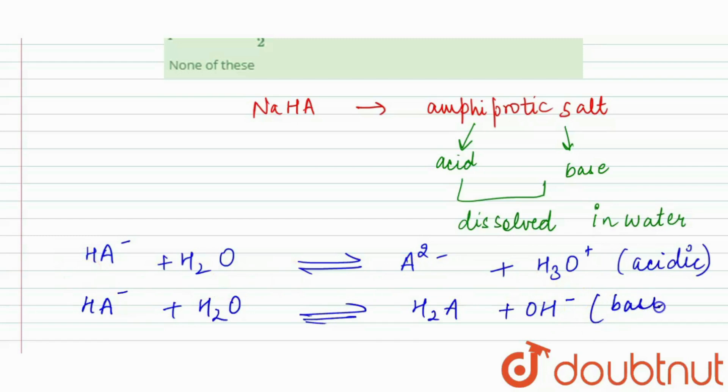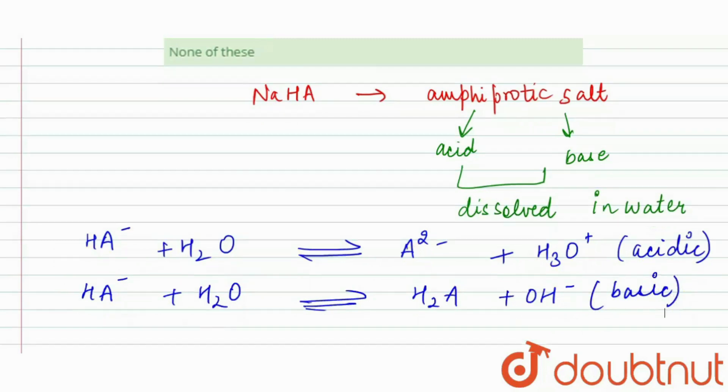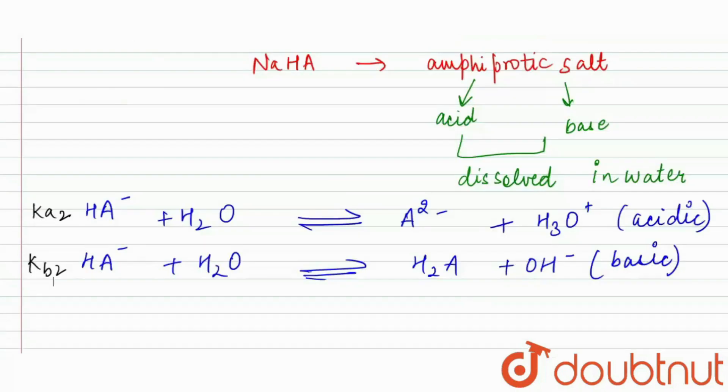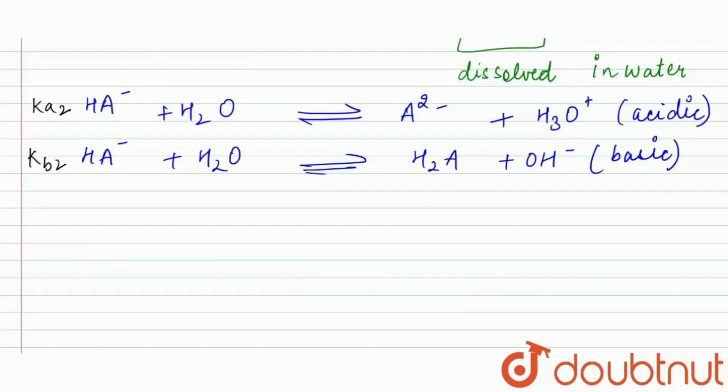If we write Ka2 for acidic and Kb2 for basic, because in the question already we are given Ka1 and Ka2 value, so you can also let it by any other name. But remember this doesn't relate with the values given in the question.